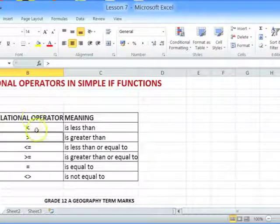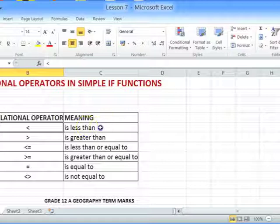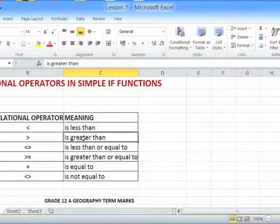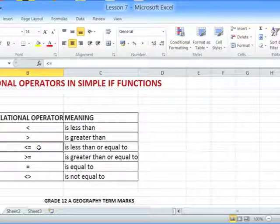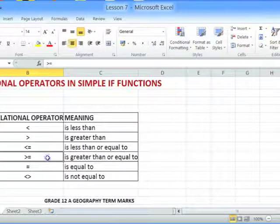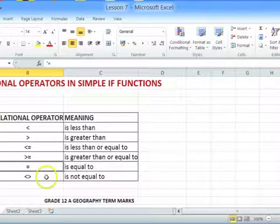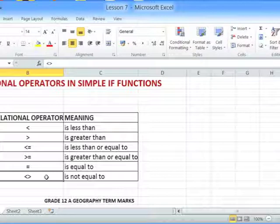The first one is the less than sign and it means is less than. The second one is the greater than sign, which means is greater than. The third one is the less than or equal to, meaning is less than or equal to. The fourth is greater than or equal to. The fifth is equal to, and the last one, the sixth one, is not equal to, which is represented by a less than and greater than sign next to each other.